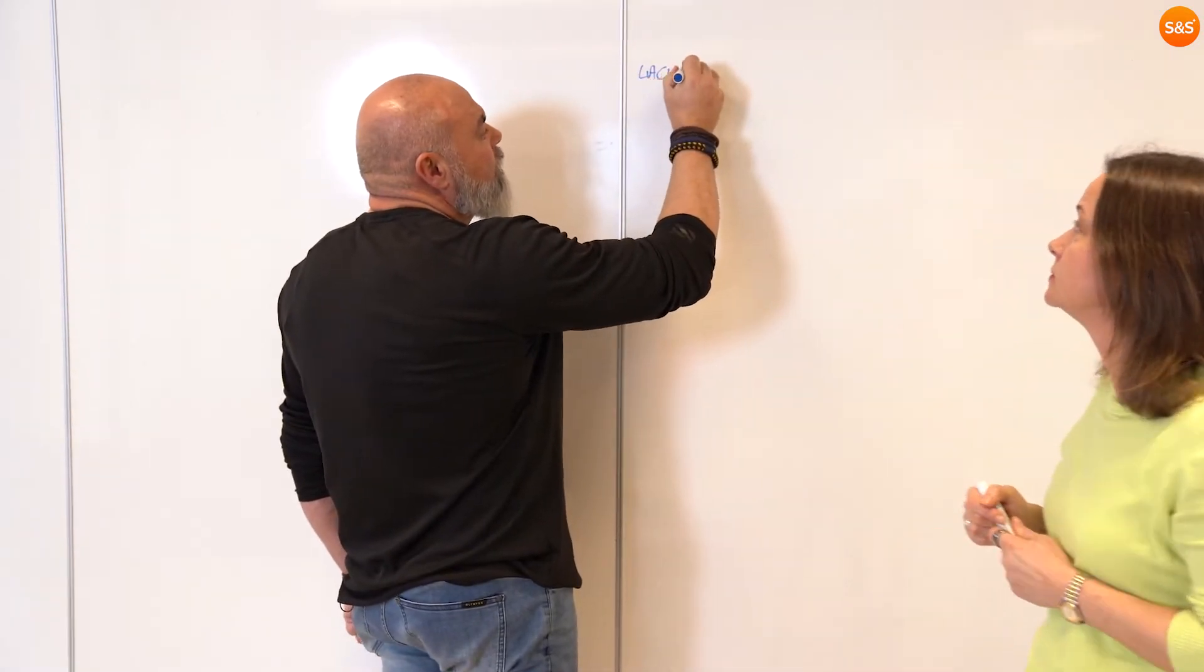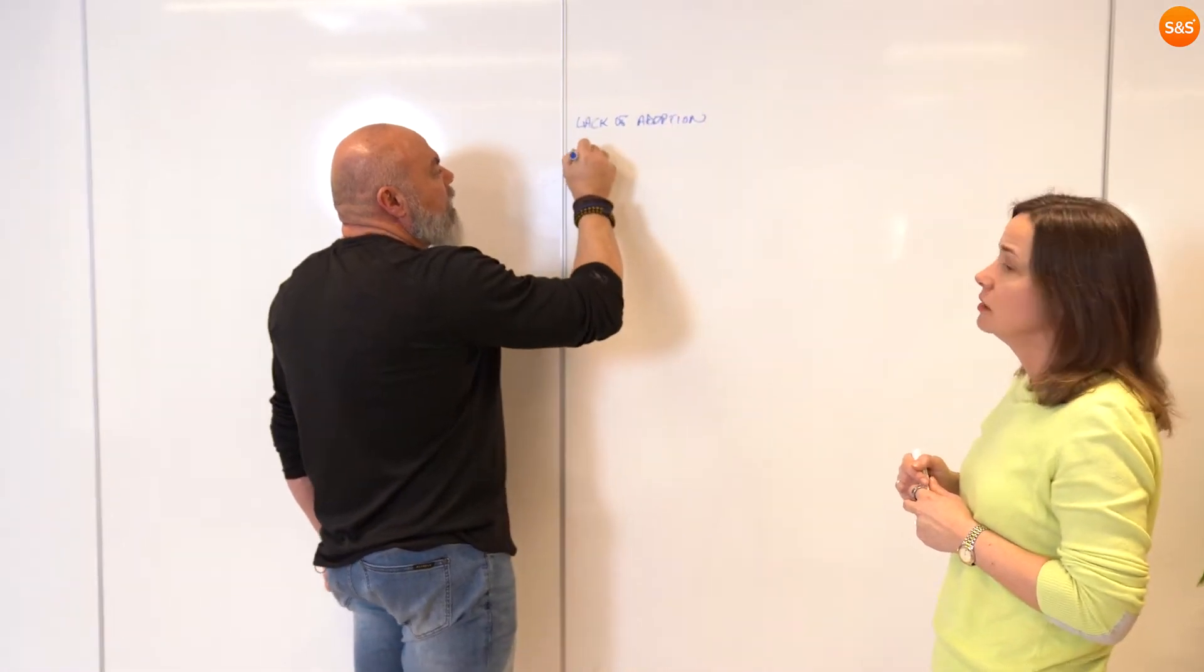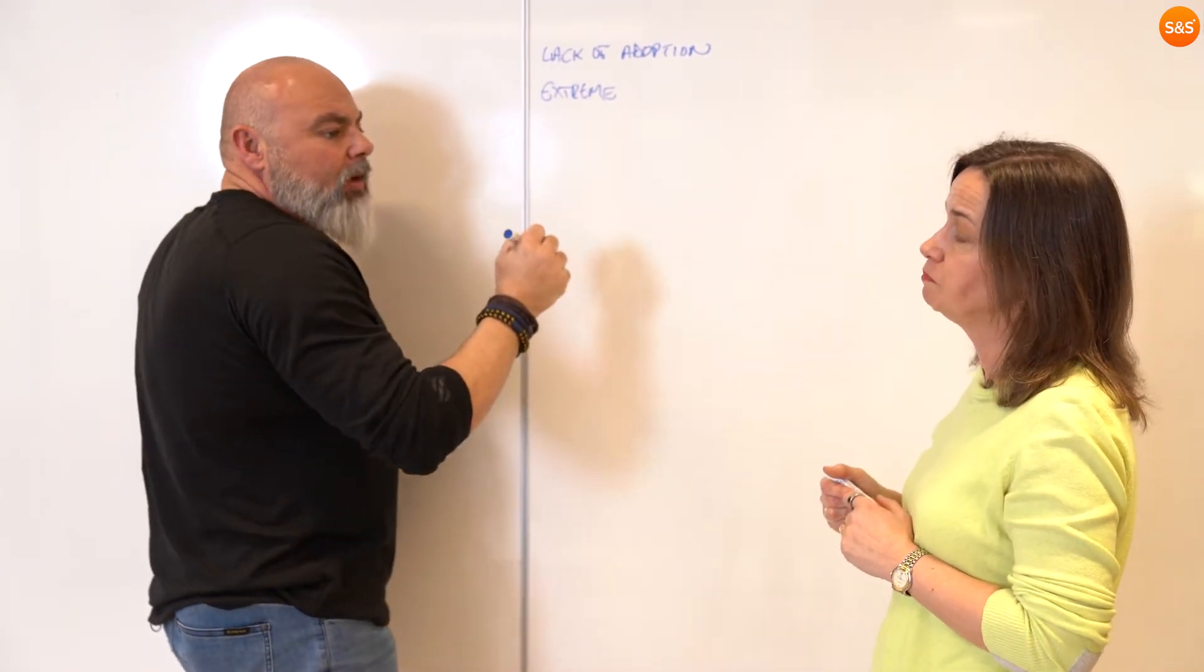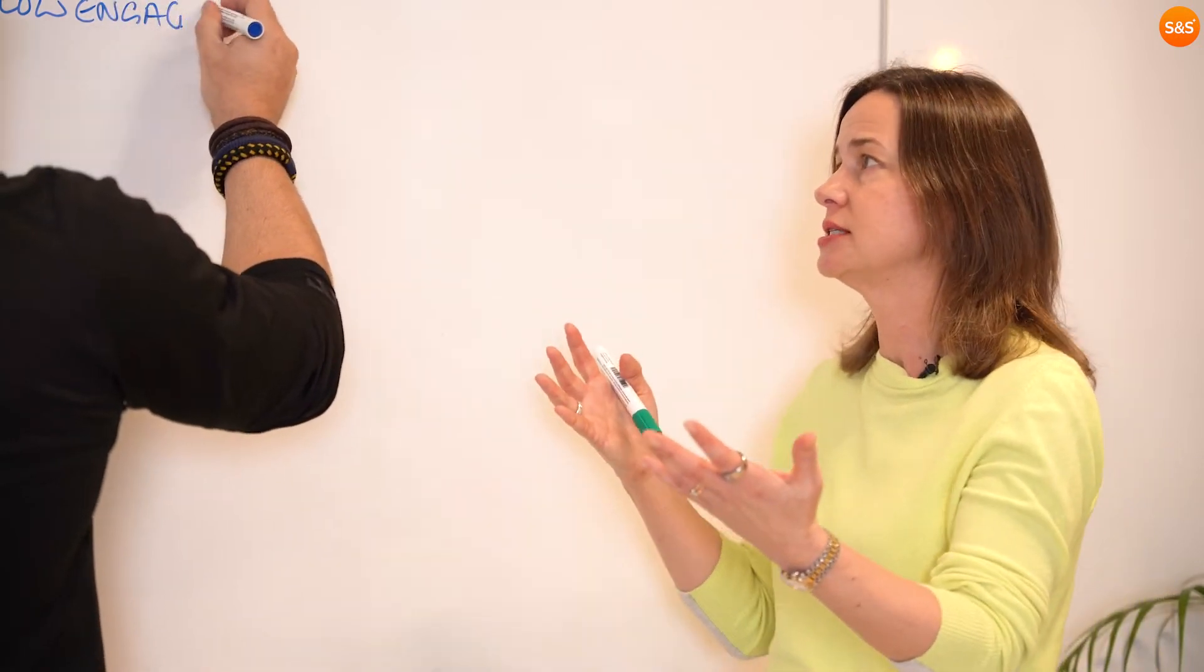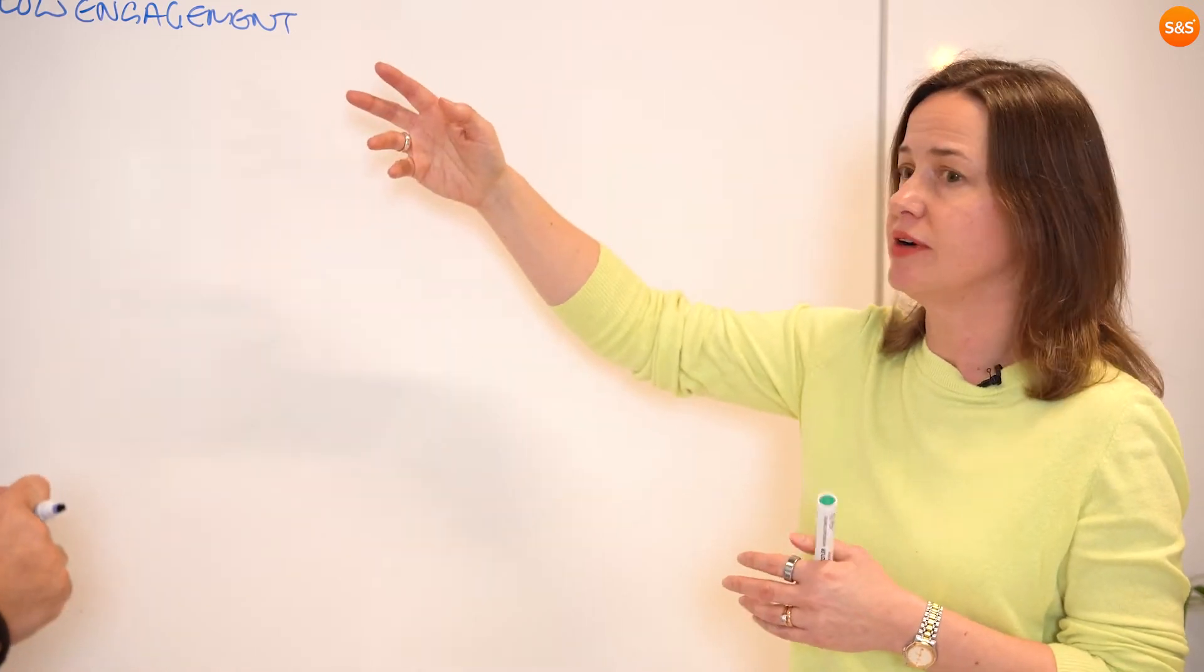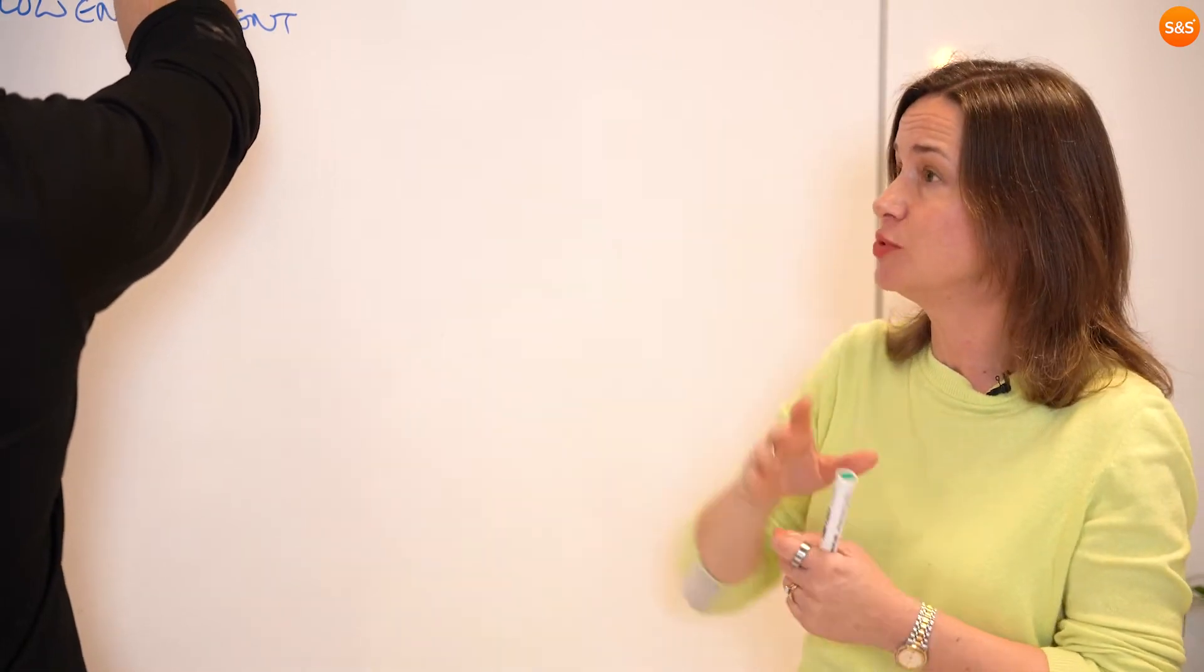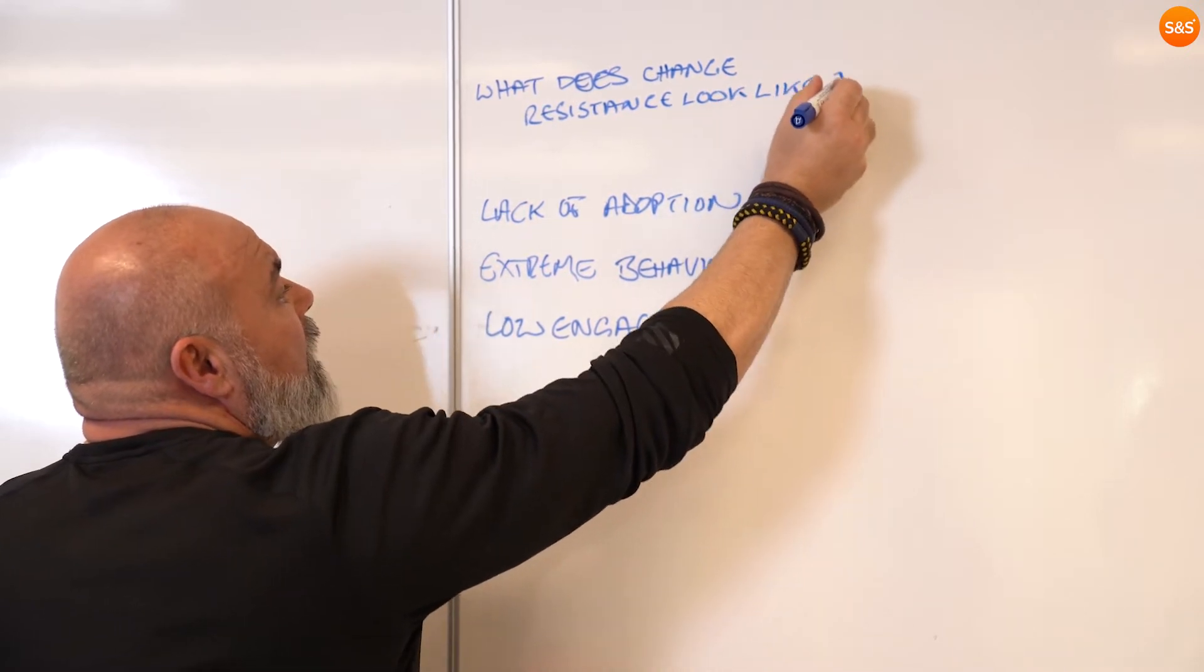Let's start here. We've got lack of adoption, maybe extreme behaviors—I hate to use the word toxic, but maybe problematic. It might be lack of engagement—refusing to come to stand-ups or training sessions. And there's people that are actually detracting or deliberately going against the change you're trying to put in place. They're doing the opposite.